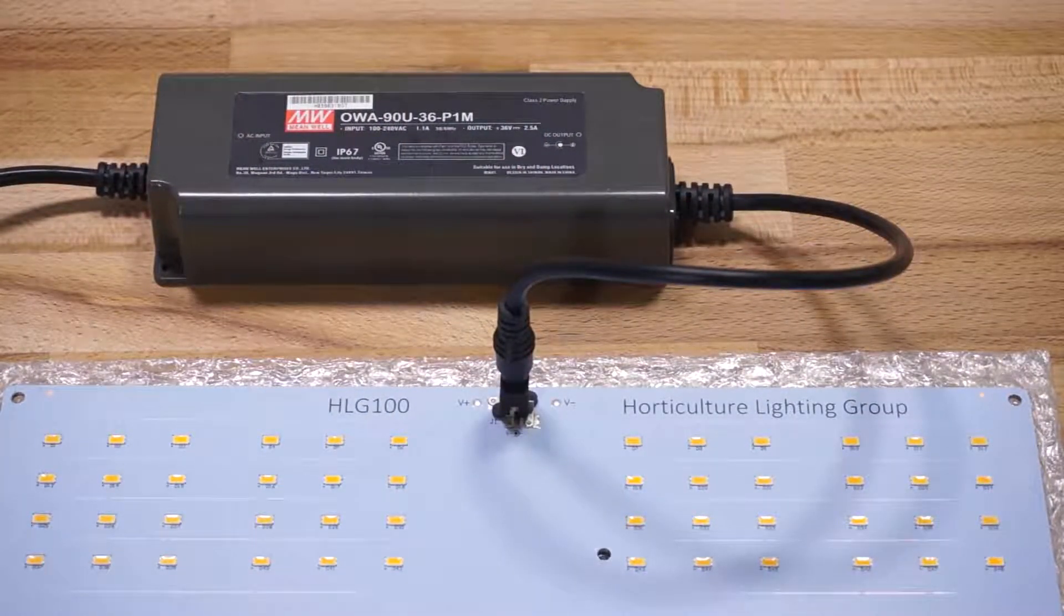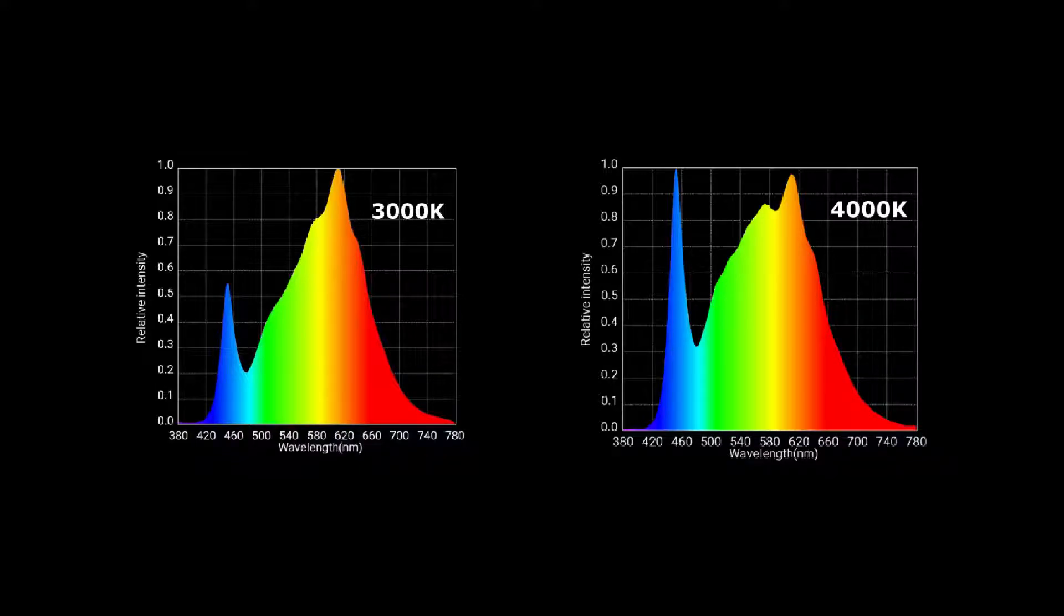The HLG-100 kits are currently available in 3000K and 4000K color temperatures. And HLG recommends if you're going to use this kit mainly for vegging or for greens, you should be going with the 4000K color temp just for that extra blue, which helps to keep node spacing tight. And if you do intend to use this light mainly as a flowering light, go with the 3000K instead for the extra red boost.